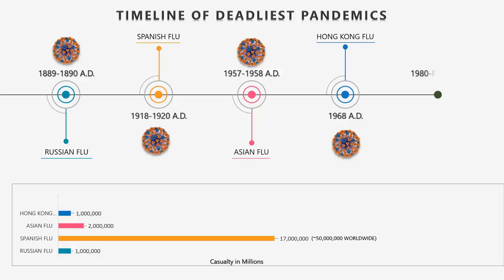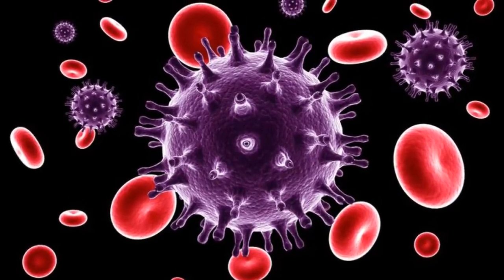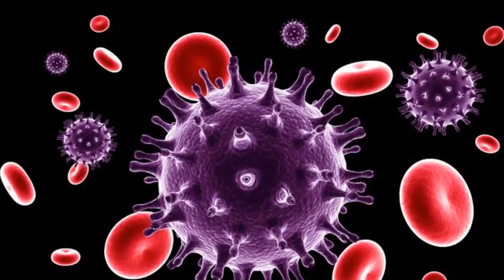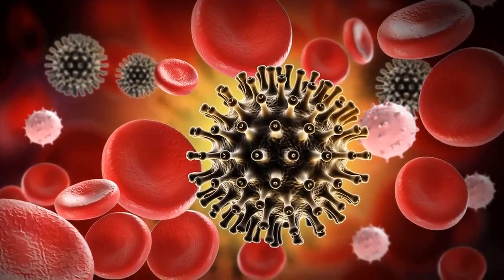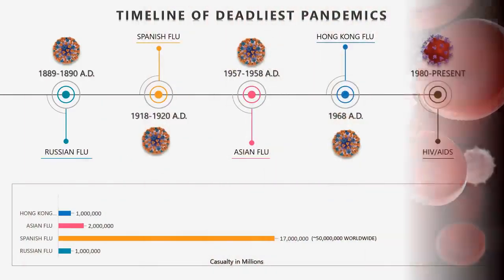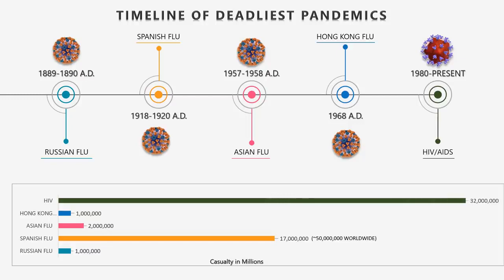At number 6: HIV. The origin of the human immunodeficiency virus has been a subject of scientific research and debate since the virus was identified in the 1980s. HIV crossed from chimps to humans in the 1920s. HIV attacks the immune system, specifically the CD4 cells or T cells. According to the WHO, 75 million people have been infected with HIV and about 32 million people have died.